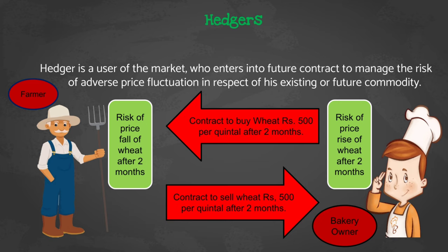Now let's understand the concept of hedgers with an example. Suppose there is a farmer who cultivates wheat. The current price of wheat is 500 rupees per quintal, but the farmer is worried that after two months the wheat price might decrease. On the other side, there is a bakery owner who needs wheat for his bakery, and the bakery owner feels that the price of wheat is going to increase after two months.